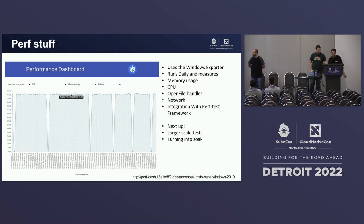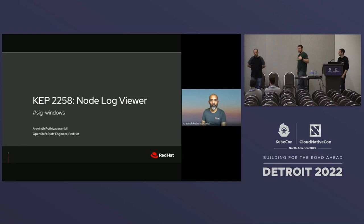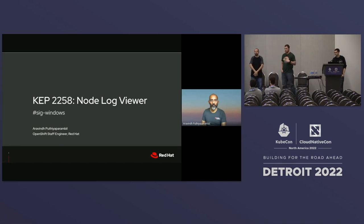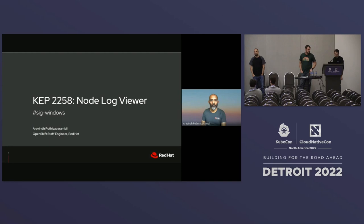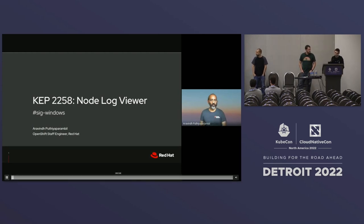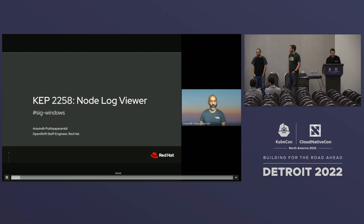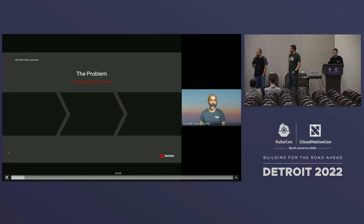Next, we're going to hand it over to Avarinth, who wasn't able to make it with us today, but he's been working in-depth with the Node team to deliver a feature that will enable Windows users to debug problems with their Windows clusters in a much easier way. We're going to play a little video. My name is Avarinth, and I'm a staff engineer at Red Hat in the OpenShift organization and lead for Windows containers at Red Hat. I'm here to talk about a new feature called NodeLogVR that we are hoping to introduce as alpha in Kubernetes 1.26.